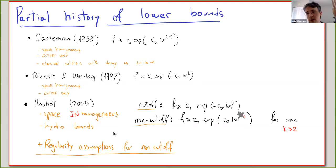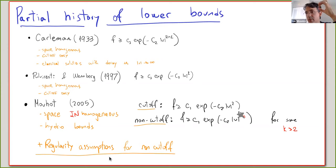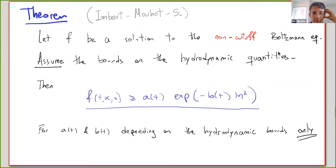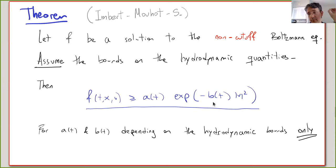In our result — joint with Clément Mouhot and Cyril Imbert — we don't fight the singularity; we don't cut off anything around the origin, and we exploit the diffusive character of the operator more precisely without making any error. Our theorem: given f a solution of the non-cutoff Boltzmann equation with hydrodynamic quantities bounded — mass bounded below and above, energy and entropy bounded above — we get a Gaussian lower bound depending only on those hydrodynamic bounds, with no further regularity assumption on f. This is optimal since as t → ∞, f converges to a Maxwellian with comparable decay.